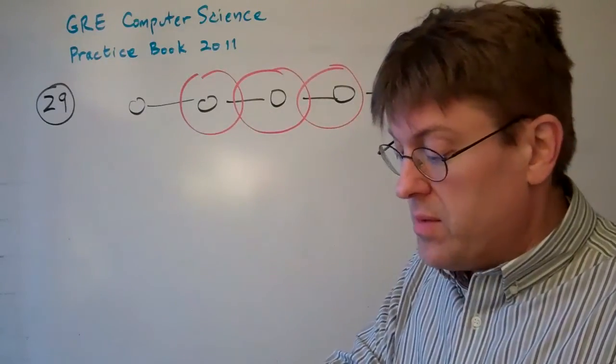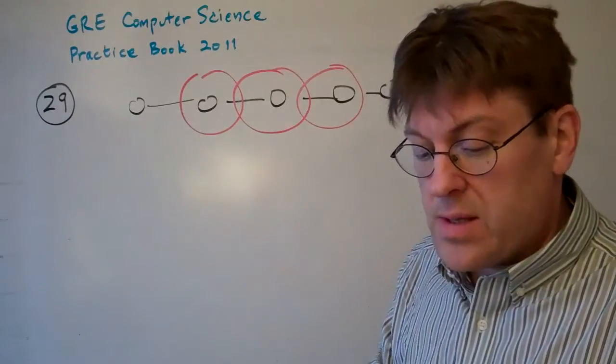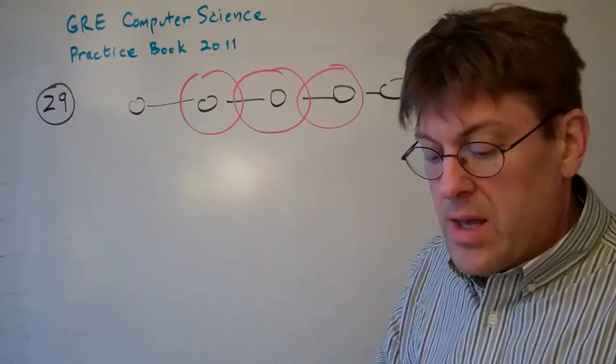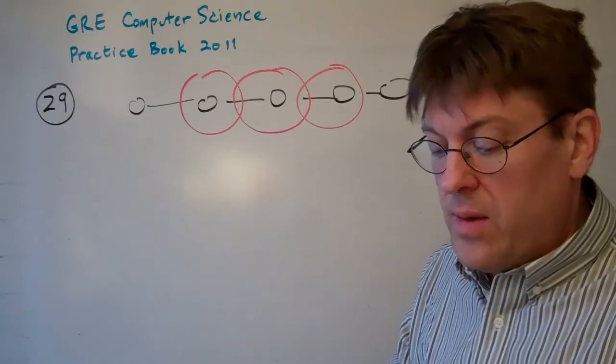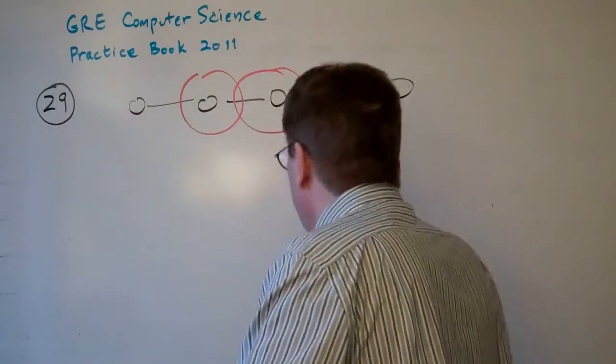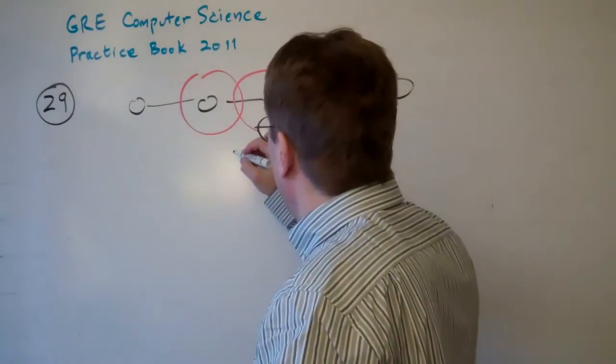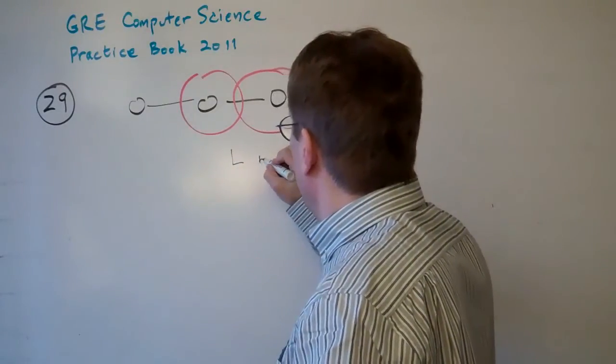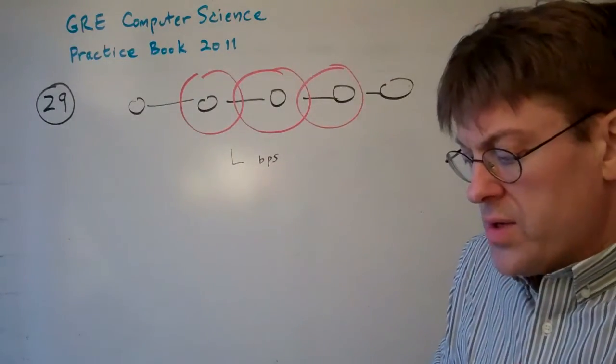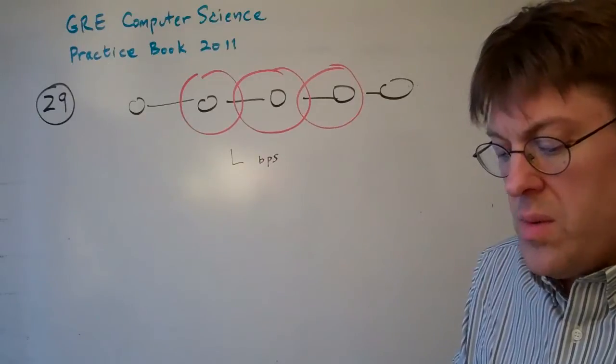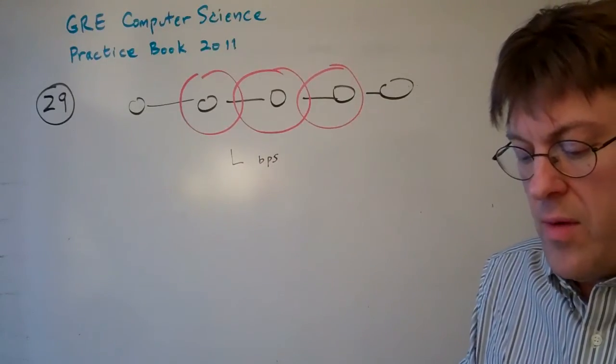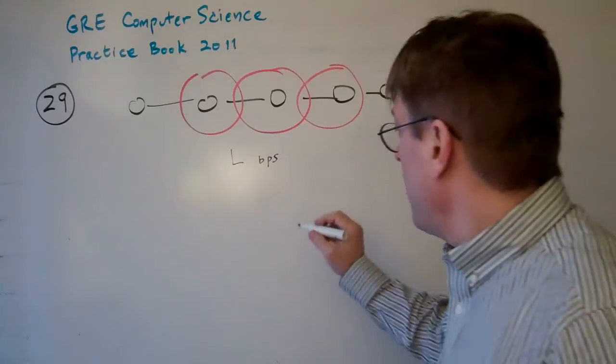It talks about carrier sense, multiple access, collision avoidance, and so forth. Bottom line is if the link bandwidth is L bits per second on one of these links here, L bits per second. Okay, for a successful transmission, what's the maximum possible total bandwidth attainable for this network in bits per second?